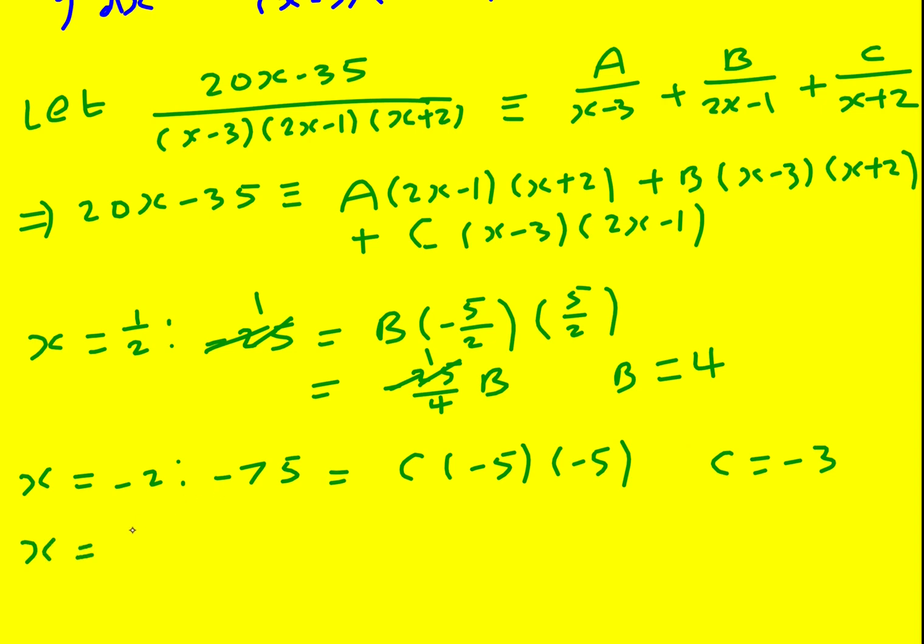And finally, x equals 3. 60 minus 35 gives 25. And then I'm going to get my term in a. So I'm going to get 6 minus 1, so 5, and then another 5. a equals 1.